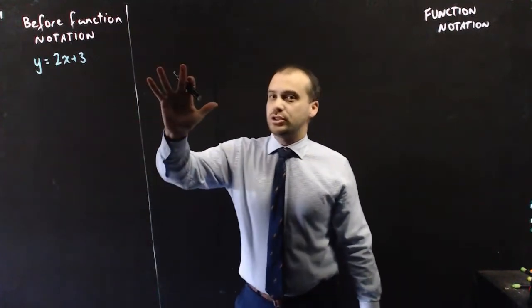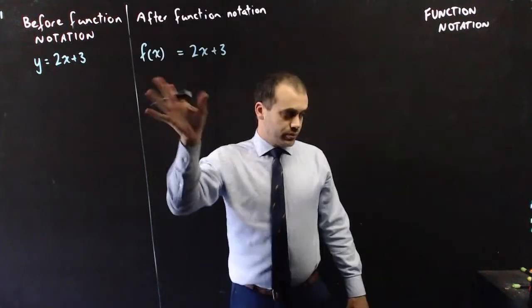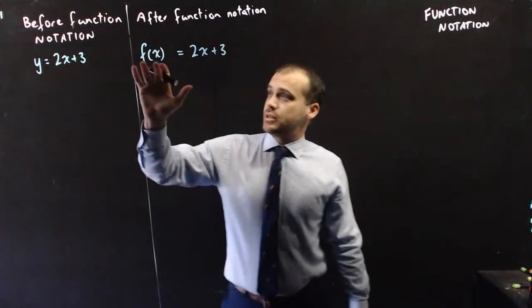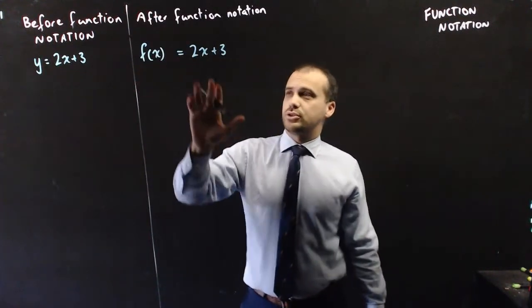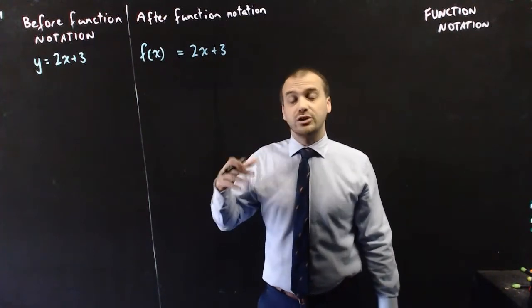Now we can write it using function notation, this is what it looks like. That's what it looks like, and it says there is a function of x equal to 2x plus 3, a function of x.